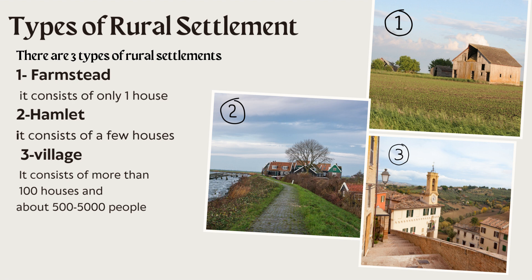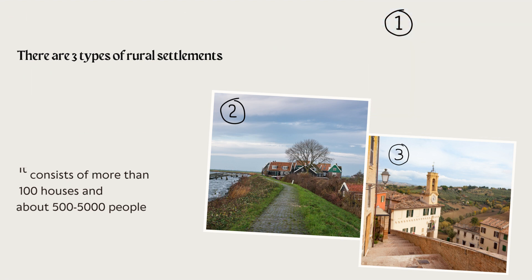The third type of rural settlement is village. It consists of more than 100 houses and about 500 to 5,000 people live there.